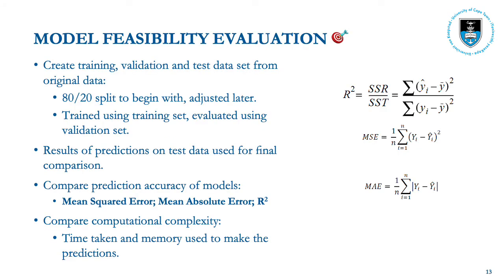To assess the models, we used a validation set as a proxy for unseen test data. The hyperparameter tuning process was done based on prediction results on the validation data, whereas the final comparisons between the optimal hyperparameter-tuned models were done based on predictions on test data. For these comparisons, the metrics we used were the mean squared error, the mean absolute error, and the coefficient of determination.